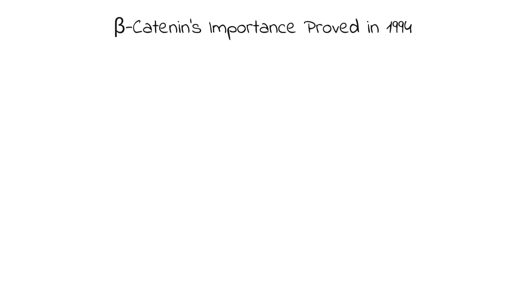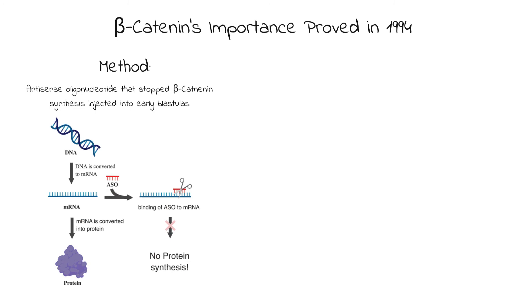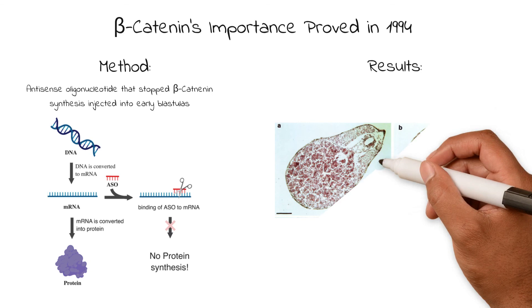Beta-catenin's importance in the creation of the Spemann-Mangold Organizer was proved in 1994 by Janet Heasman and her team at the Institute of Human Genetics. What they did was take an antisense oligonucleotide that was the complementary RNA of the strand that produced beta-catenin in cells and injected it into the dorsal side of the embryo.